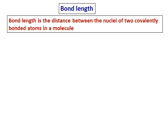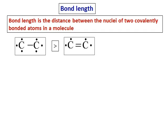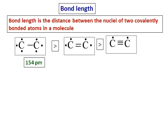After a bond is formed, let's see how long it is. Bond length is the distance between the nuclei of two covalently bonded atoms in a molecule. A carbon-carbon single bond is larger than a carbon-carbon double bond, which is larger than a carbon-carbon triple bond. The values are: single bond 154 pm, double bond 133 pm, and triple bond 120 pm.